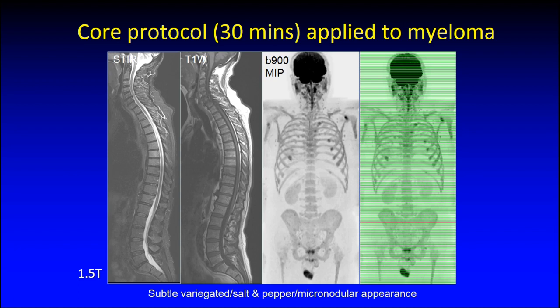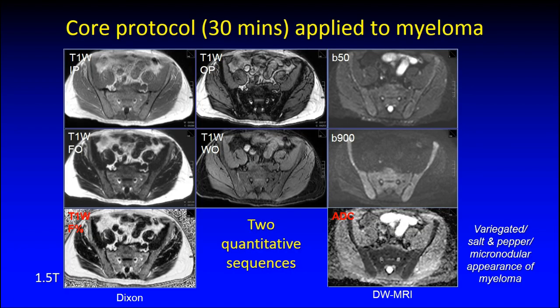The core protocol should take about 30 minutes. A typical series of images from the core protocol applied to multiple myeloma includes the STIR, the T1 sequence of the spine, and a MIPped projection of the high B value image. There are two mandatory quantitative sequences: the Dixon technique provides in-phase, opposed-phase, water, and fat images with mandatory fat fraction reconstructions, and diffusion uses B50 and B900 values from which a mandatory ADC map is reconstructed. So two quantitative sequences alongside morphological imaging.